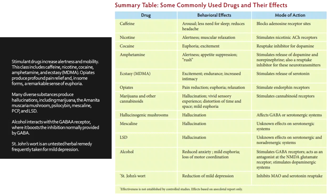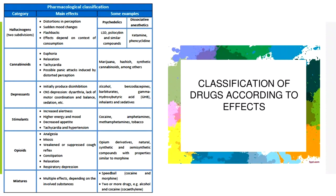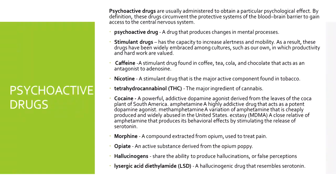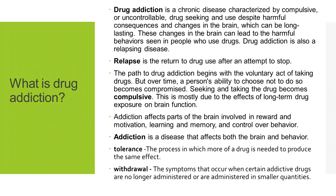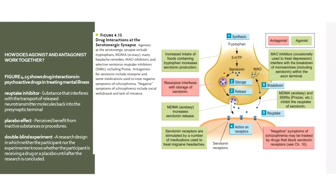Stimulant drugs increase alertness and mobility — this includes caffeine, nicotine, cocaine, amphetamine, and ecstasy. There is a table here that summarizes the different types of commonly used drugs and their effects. I hope you've learned something. Please read the book — you can learn more by reading it. Thank you so much for listening. Have a great day.